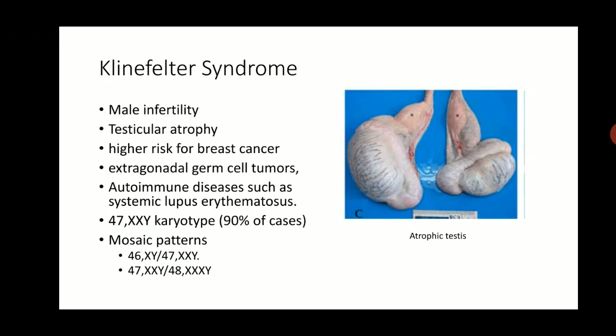Klinefelter syndrome is the most common cause of male infertility because the patients have atrophic testes with absent spermatogenesis. They are at high risk of breast cancer and germ cell tumours such as seminomas and teratomas. They are also prone to autoimmune diseases like SLE. Karyotyping shows that 90% of patients have an extra X chromosome — 47XXY — and the remaining 10% have mosaic patterns including some cells with 46XY and some with 47XXY.